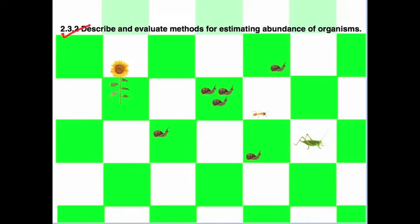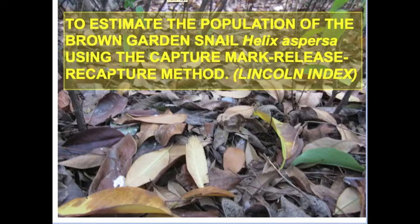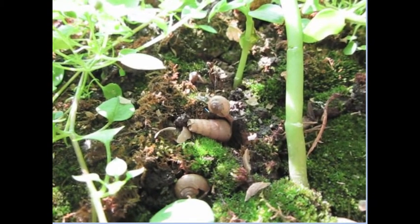Today's lesson we describe and evaluate a method for estimating the abundance of organisms. Our aim is to estimate the population of the brown garden snail, Helix Aspersa, using the Capture Mark Release Recapture method, also known as the Lincoln Index.